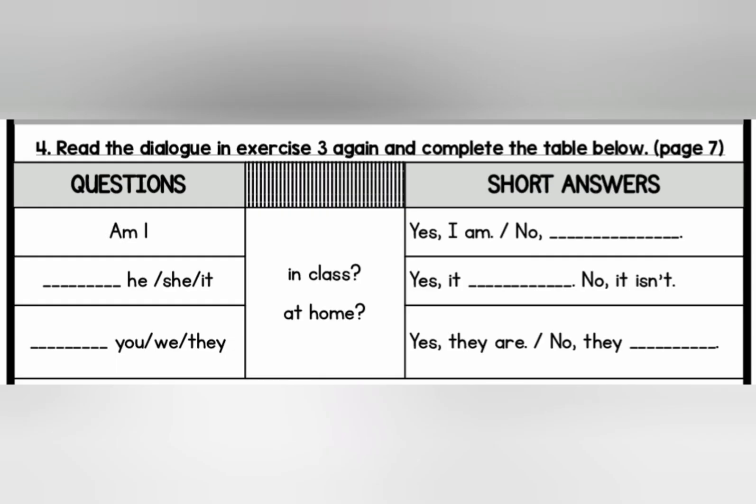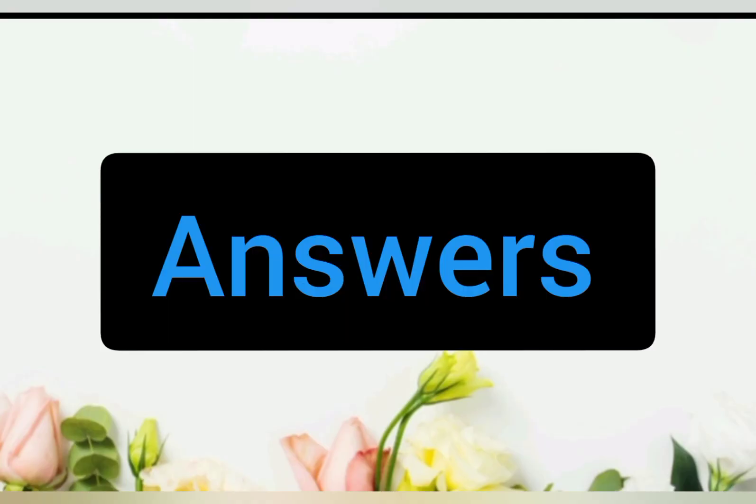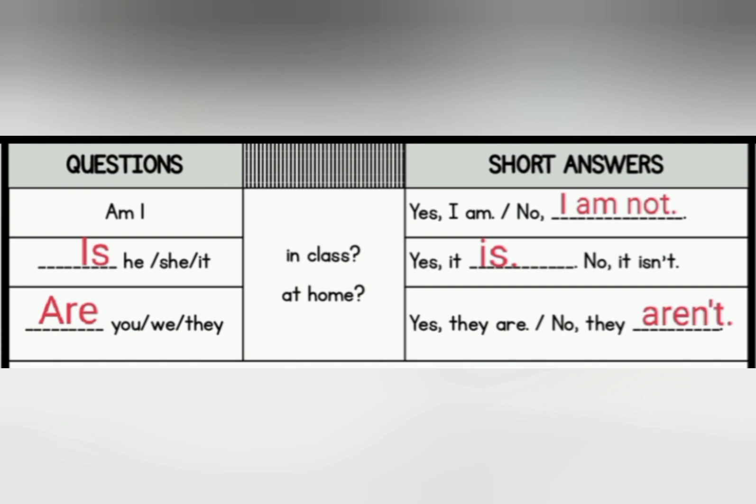Let's proceed to the next exercise. You have to fill in the blanks. Example: am I? And the short answers will be yes I am, and no I am not. Since he, she and it are singular, so you should write is — is he, is she, is it? And the answer is yes it is, no it isn't. And for the last one, you, we and they are plural, so you should write are in front of them, and the answers would be yes they are, no they are not.